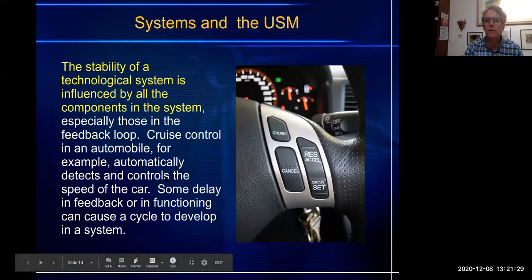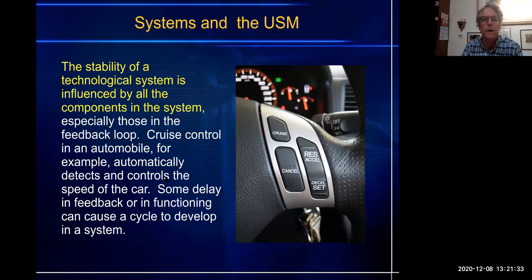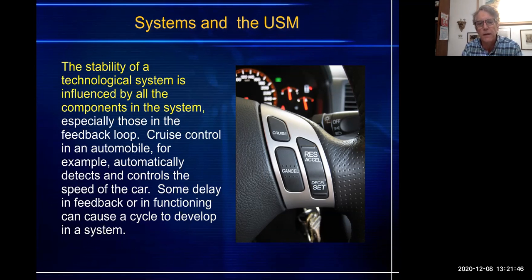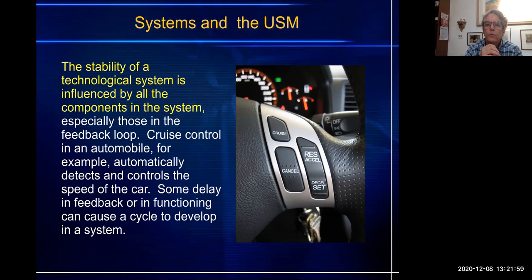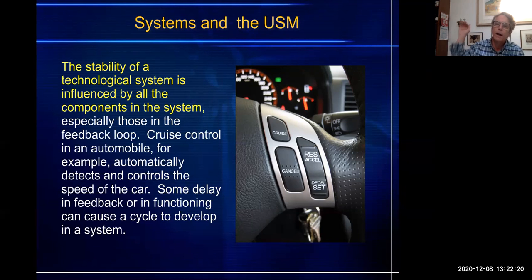Car: open system. I need to see that fuel meter to fill it — my car doesn't take itself to the gas station for me. The stability of a technological system is influenced by all the components in the system, especially those in the feedback loop. Cruise control in an automobile automatically detects and controls the speed of the car. Cruise control is interesting because it only limits the accelerator — it will keep you at a constant speed going uphill, and it will stop accelerating as you go downhill, but it does not activate your brakes. It does not actually keep your vehicle only at 30 miles an hour.